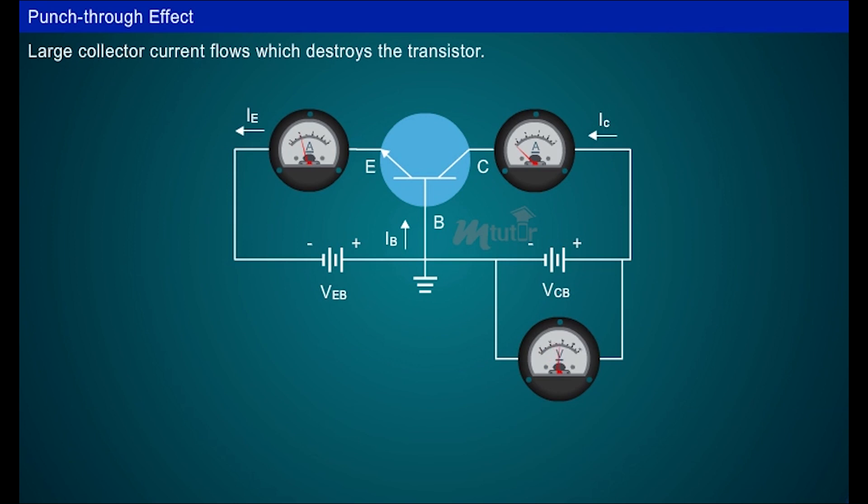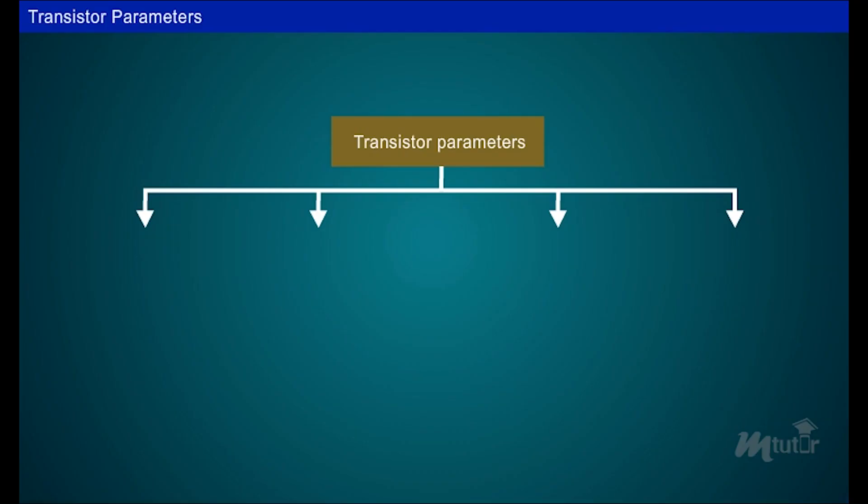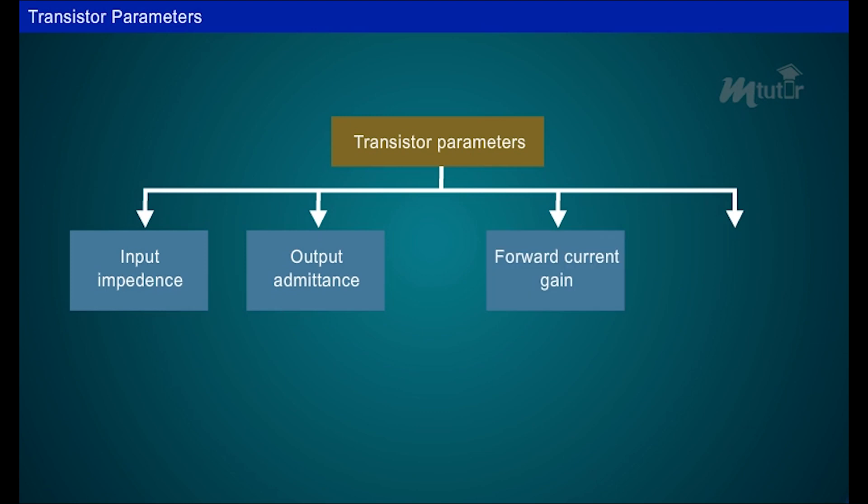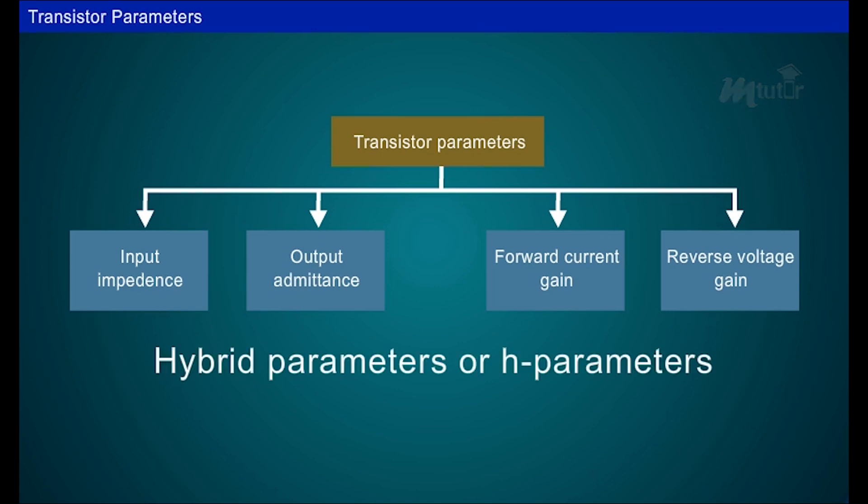The slope of the CB characteristics gives the four transistor parameters, namely input impedance, output admittance, forward current gain and reverse voltage gain. They are commonly known as common base hybrid parameters or H-parameters.